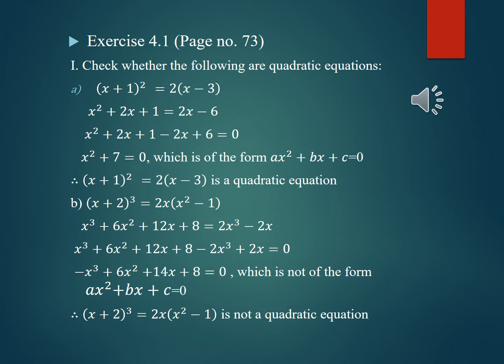Question (b): (x + 2)³ = 2x(x² - 1). Applying the identity (a + b)³ = a³ + 3a²b + 3ab² + b³, the LHS becomes x³ + 6x² + 12x + 8, and the right side becomes 2x³ - 2x. Finally the equation is -x³ + 6x² + 14x + 8 = 0, which is not of the form ax² + bx + c = 0. Therefore we can say it is not a quadratic equation.